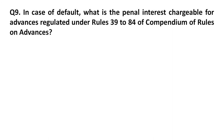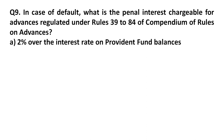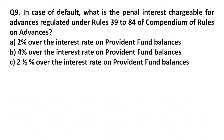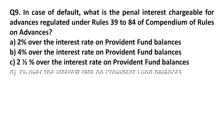Question 9: In case of default, what is the penal interest chargeable for advances regulated under Rules 39 to 84 of the Compendium of Rules on Advances? Option A: 2% over the interest rate on provident fund balances. Option B: 4% over the interest rate on provident fund balances. Option C: 2.5% over the interest rate on provident fund balances. Option D: 3% over the interest rate on provident fund balances.